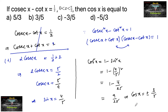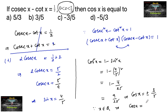Since x lies between 0 and π/2, x is in the first quadrant where cosine is positive, so cos x equals +3/5. You can take option two. Thank you.